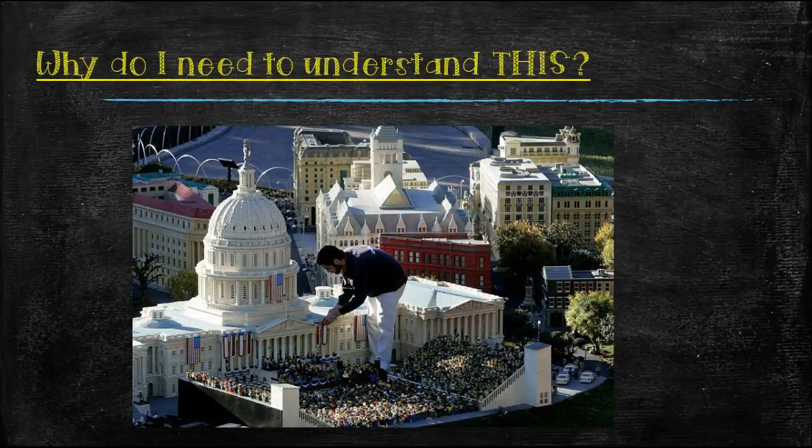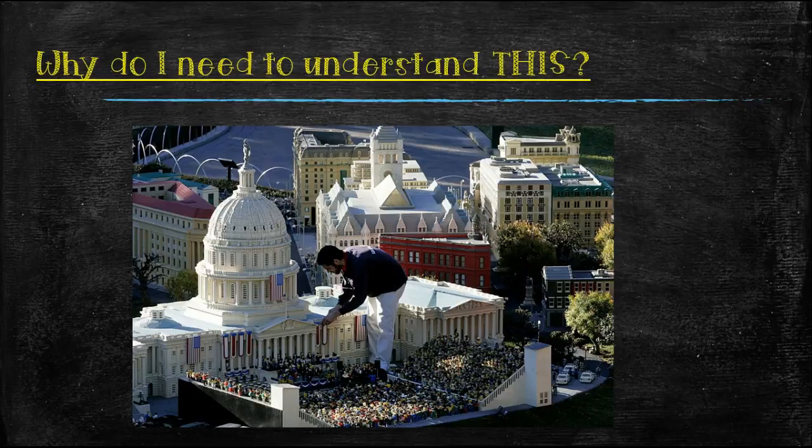So why in the world do you need to understand this? Well, let's take a look at this guy here. He built an entire replica of Washington, D.C. and the Capitol building, the buildings around it, all out of Legos. I mean, who doesn't love Legos, right? I'm sure you've seen these before, either at Legoland or someplace else. They're amazing and they look exactly like the real thing, except they're just smaller. So how did they figure out how to do this? Well, they did scaling.